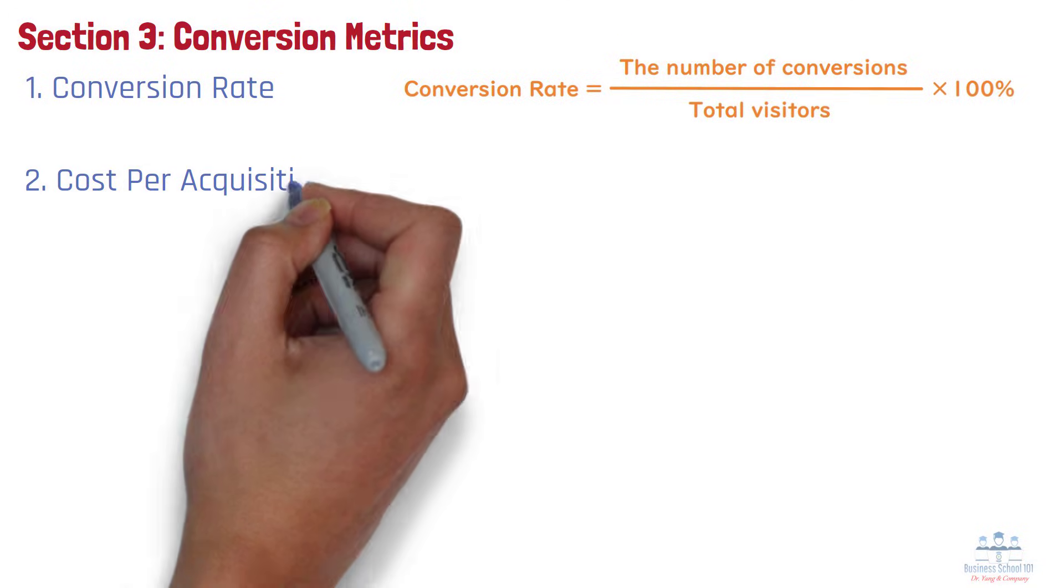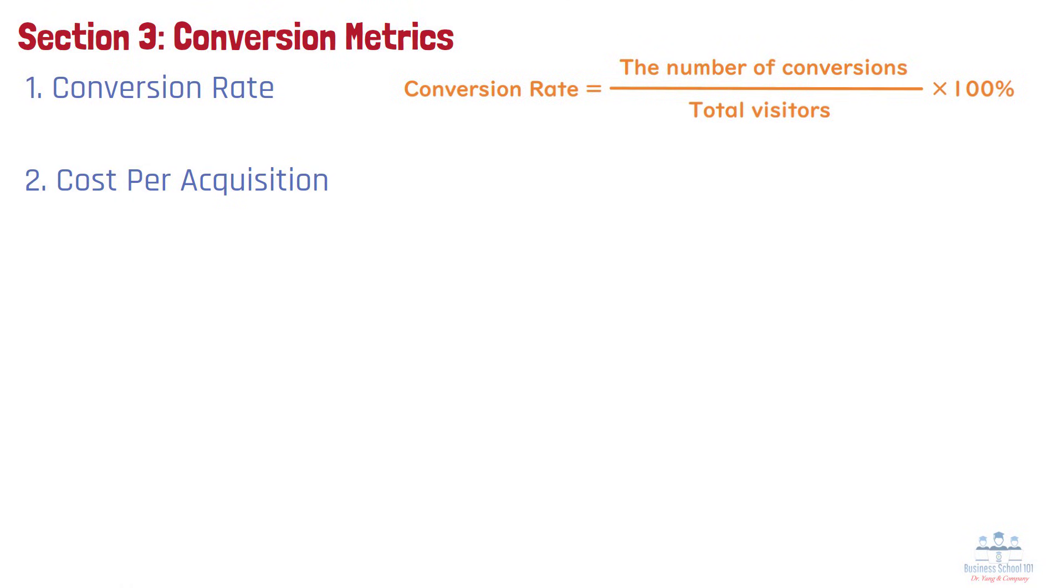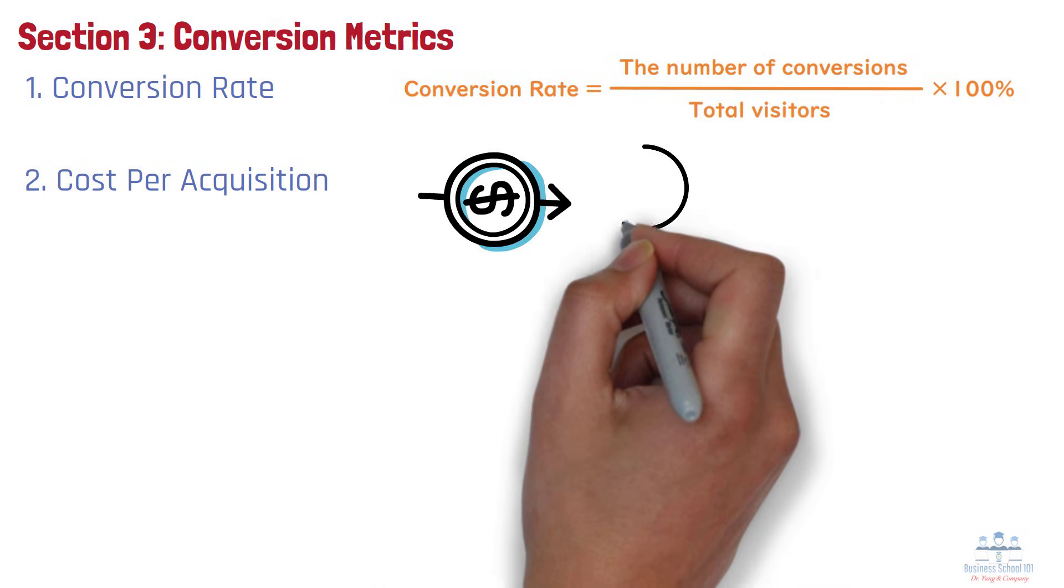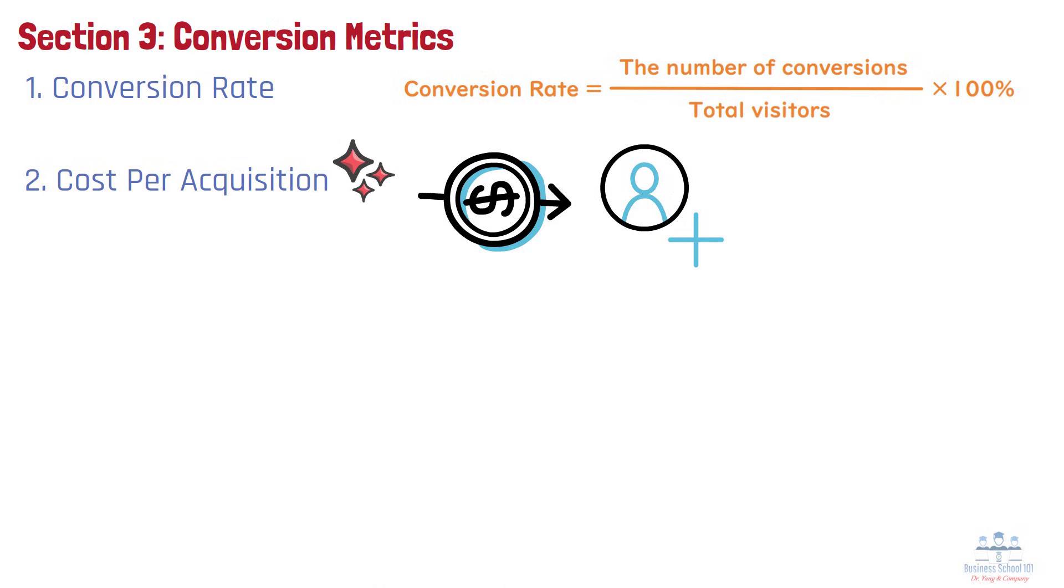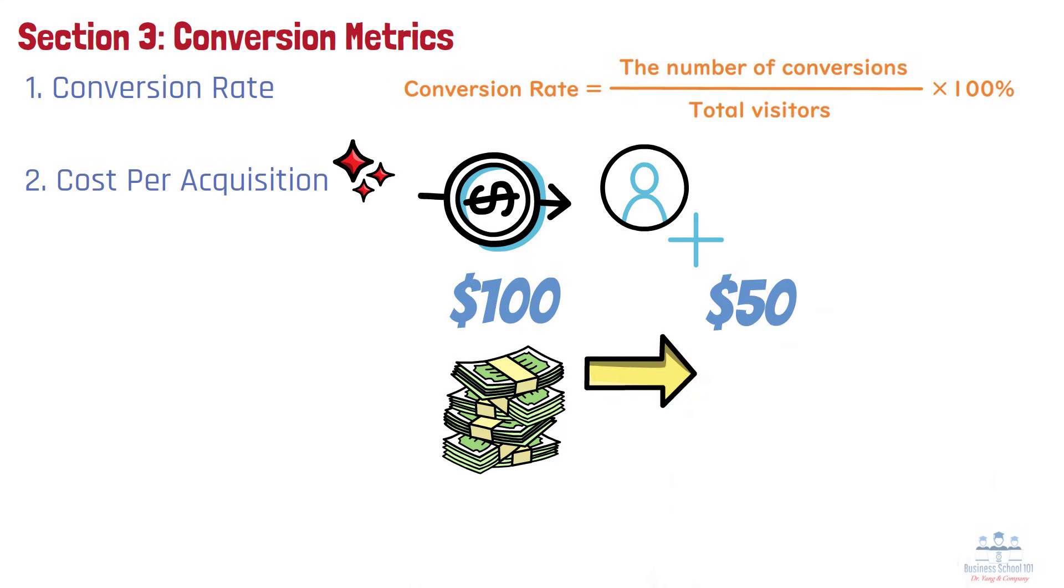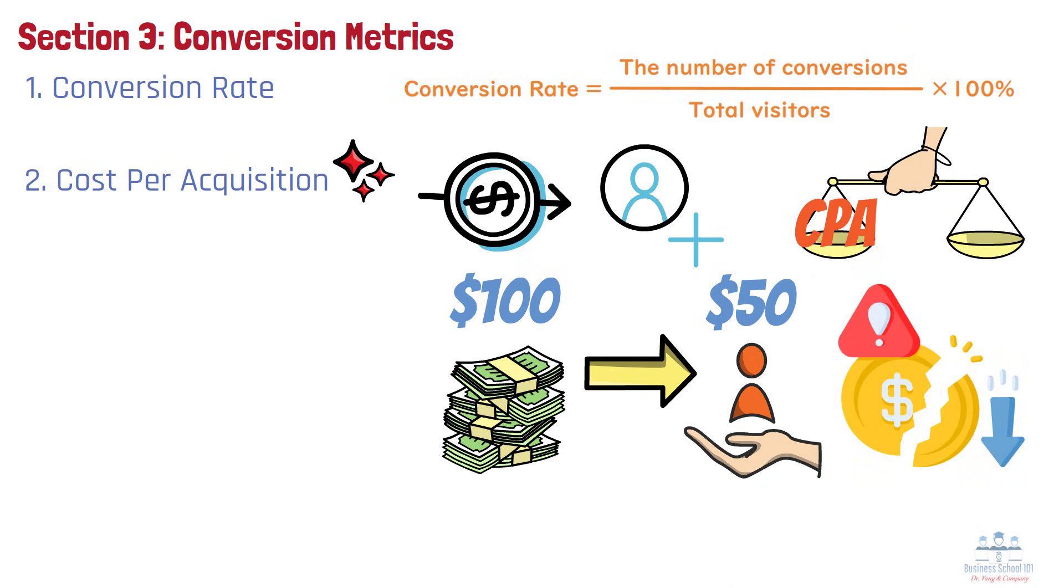Number 2. Cost Per Acquisition. Cost per acquisition reflects how much you're spending to acquire a single paying customer. It's crucial for understanding the financial efficiency of your campaigns. If you're spending $100 to gain a $50 customer, your marketing isn't sustainable. Businesses must balance CPA against customer lifetime value to remain profitable.